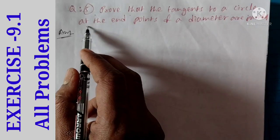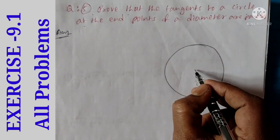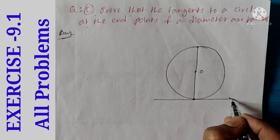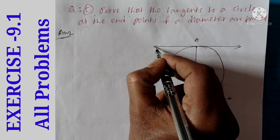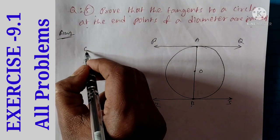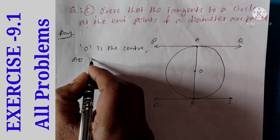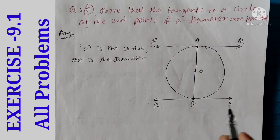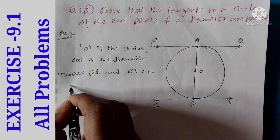Last question of this exercise — Question number 5: prove that the tangent to a circle at the end points of a diameter are parallel. We draw a circle with center O. This is the diameter, and we draw two tangents at its end points A and B. Tangent PQ intersects at A and tangent RS intersects at B. O is the center and AB is the diameter. Draw PQ and RS as the tangents at A and B.